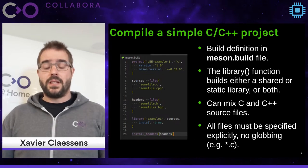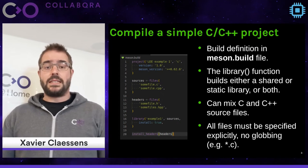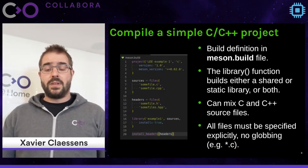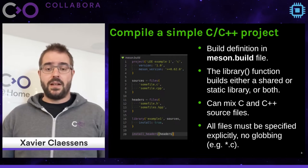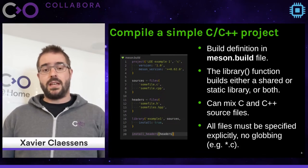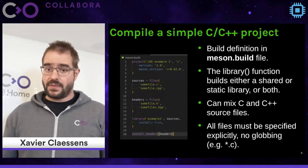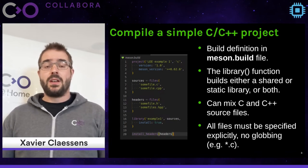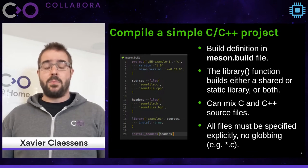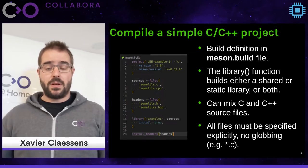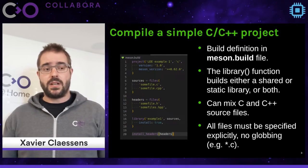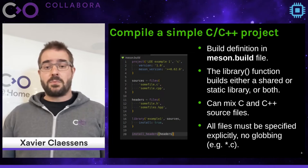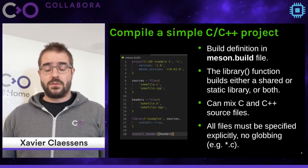You have all the documentation on the mesonbuild.com website. Documentation is something we really try to keep as complete as possible — every API documented, every feature documented. If anything is not clear or you have any question, you can always go to the GitHub project, open an issue, or even open a pull request, and we'll try to review it and get it merged.